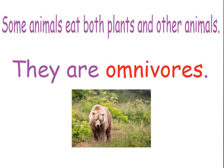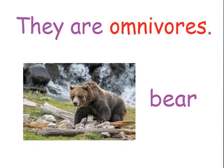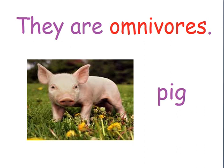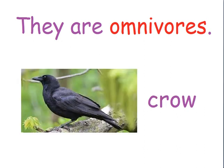Some animals eat both plants and other animals. They are known as omnivores. Let's look at some examples of animals that eat both plants and other animals. Some omnivores are the bear, pig and the crow.